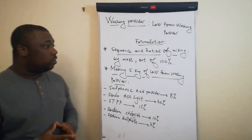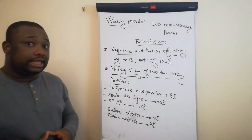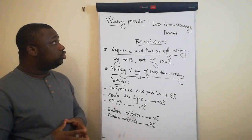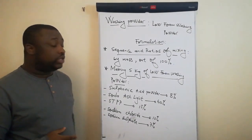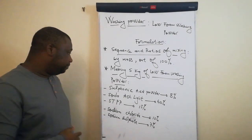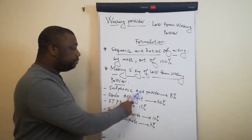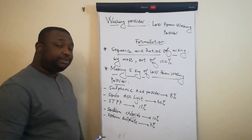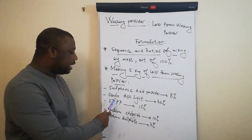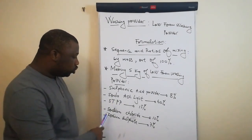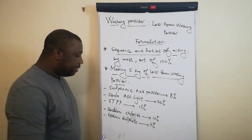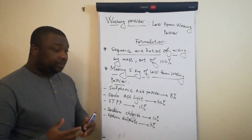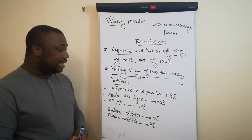Here we go. Let's start by stating the ingredients. What are the ingredients that you need to produce your low foam washing powder? The ingredients are: sulfonic acid powder, soda ash light, STPP — which stands for sodium tripolyphosphate — sodium chloride, and sodium sulfate.